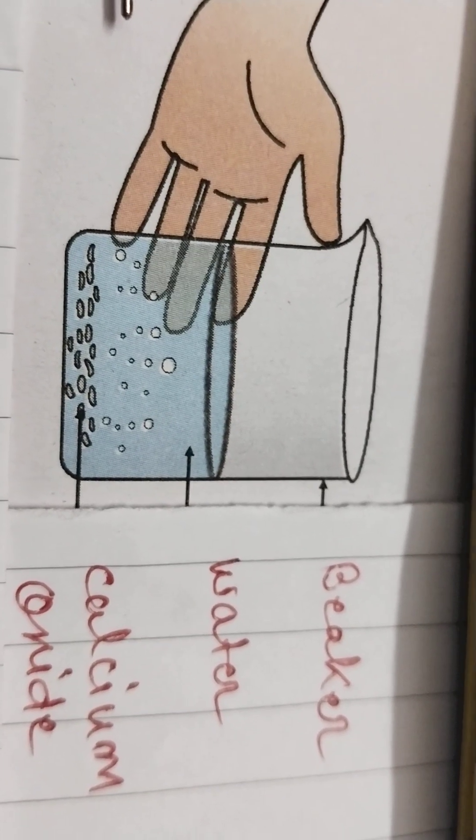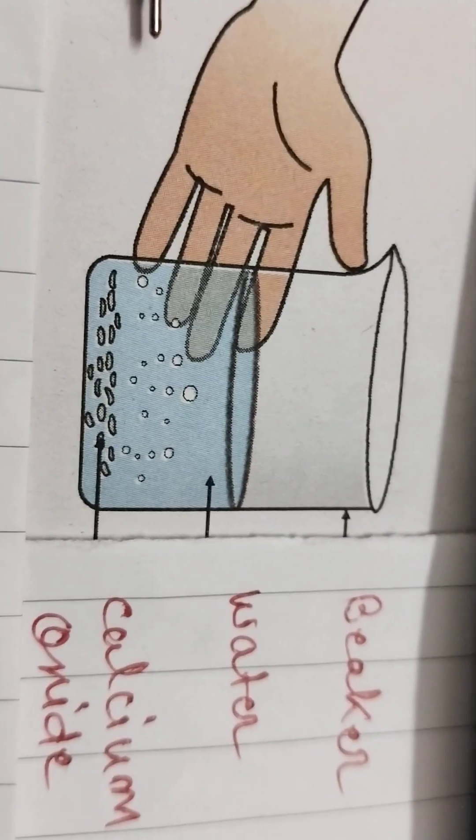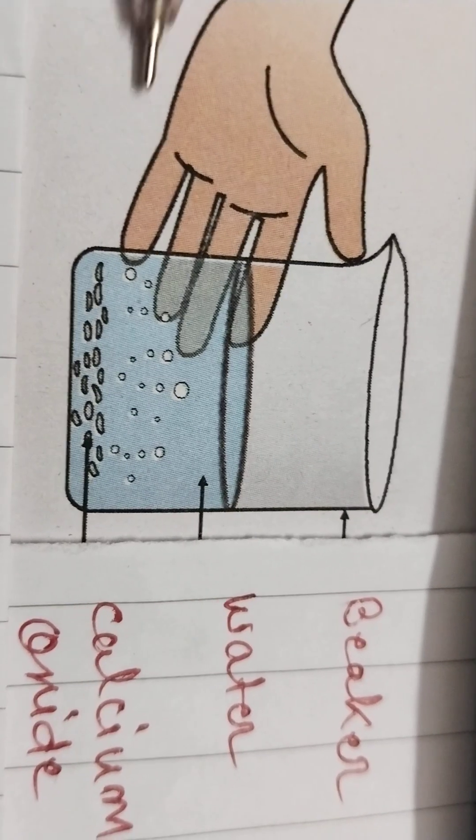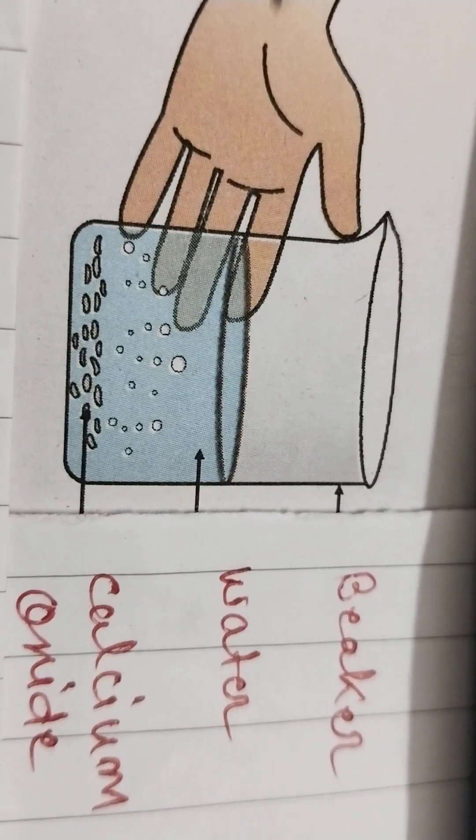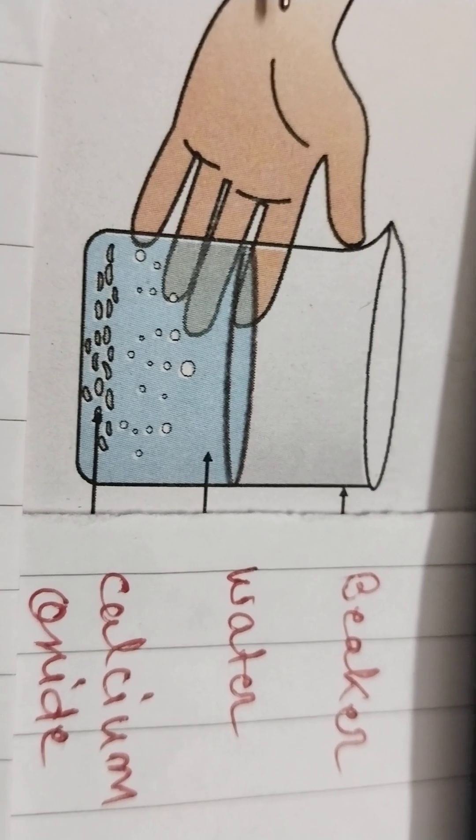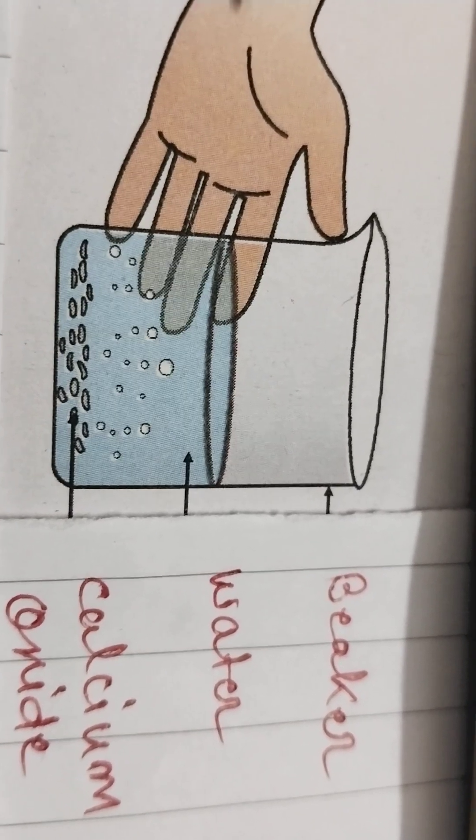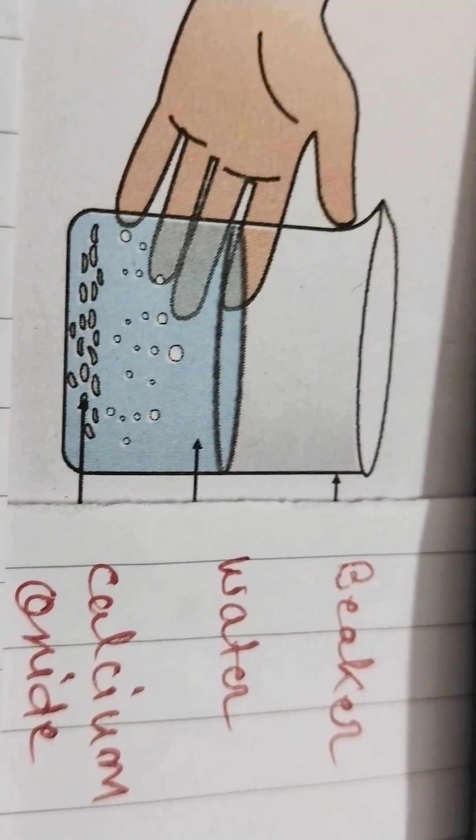When water and calcium oxide react, calcium hydroxide is formed and heat is released. Due to this heat, water starts boiling and the beaker becomes warm.